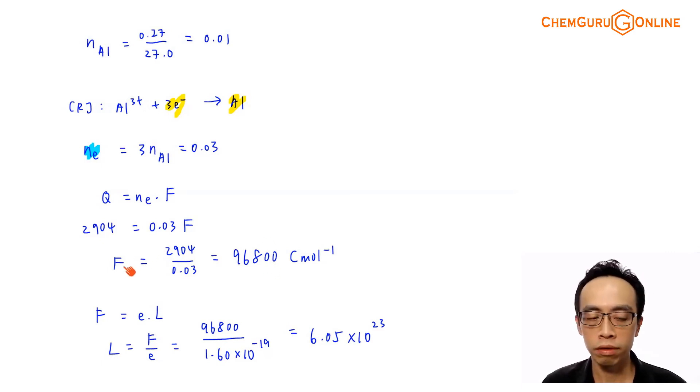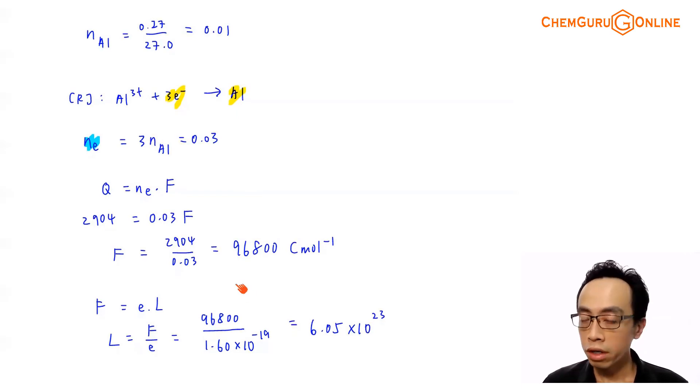Now remember, we have to solve for your Faraday's constant. Now we're not supposed to use the Faraday's constant inside the data booklet. So based on the calculation, this is the value of Faraday's constant that we are getting, 96800 Coulomb per mole.